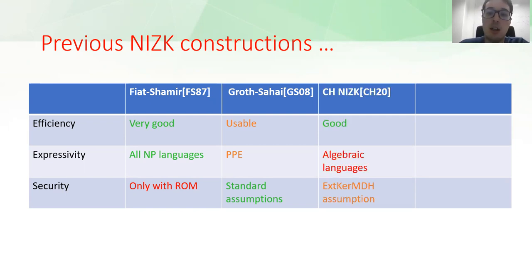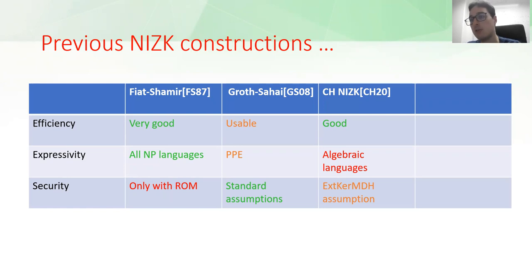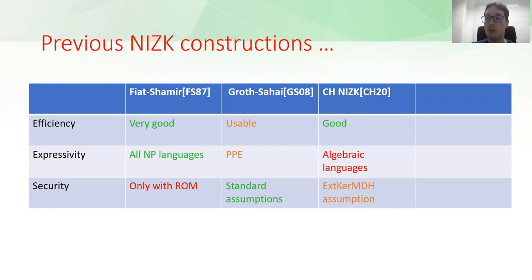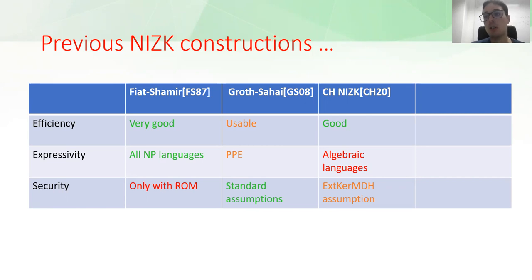More recently, Couteau and Hartmann developed a new framework for defining NIZKs. Their idea is a compiler that, like the Fiat-Shamir transform, defines NIZKs from Sigma Protocols. However, they compile only for more specific Sigma Protocols. So even though those NIZKs have some very appealing features—such as efficiency comparable to Fiat-Shamir for some applications—they also have critical limitations. For instance, they are defined only for algebraic languages, which is a very restricted class. Moreover, their assumption is based on a novel XKerMDH assumption, which was not sufficiently motivated in the original paper.